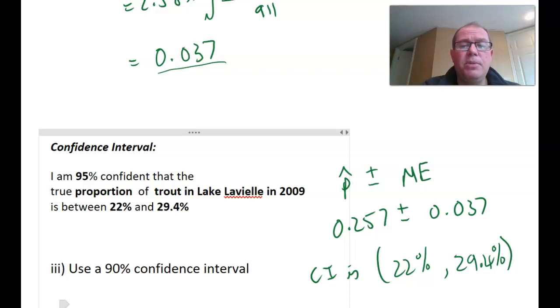Let's work out our confidence interval. We take our estimate P hat, which is 0.257 plus or minus our new margin of error, which is 0.037. Adding 0.037 gives me an upper bound of 29.4%, and subtracting gives me 22%. So I'm 99% confident that the true proportion of trout in Lake Lavier is between 22% and 29.4%, which is a wider interval.